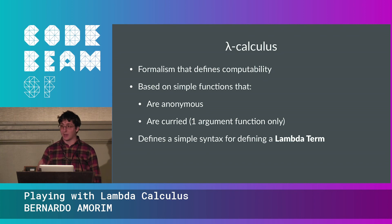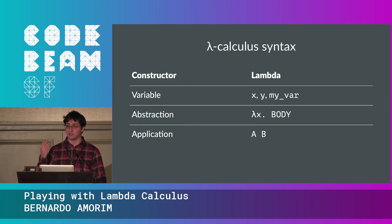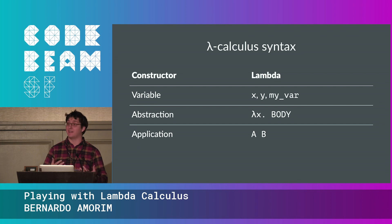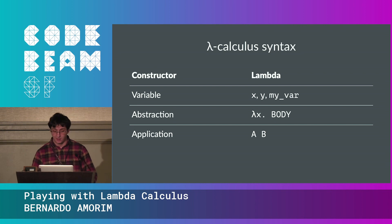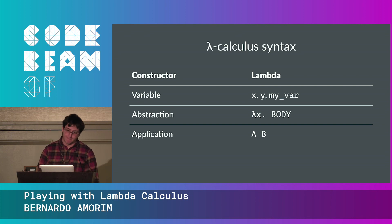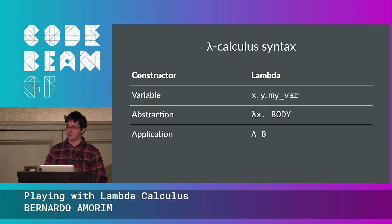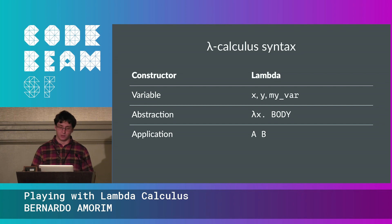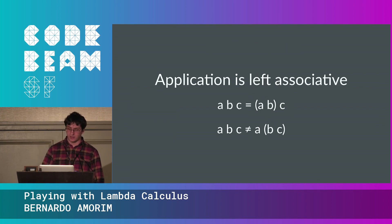Lambda calculus defines a syntax for lambda terms with three types of constructs. Variables are names you give to something. Abstractions are function definitions — you use the Greek letter lambda, then a dot, and everything to the right is the body of the function. Church chose lambda because others were using sigma or similar symbols. You can also do application — since everything is a function, you apply one to another by placing them with a space, similar to Haskell. Application is left-associative.